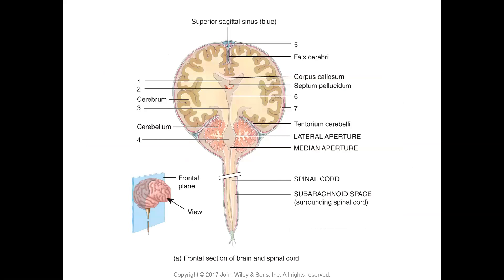The brain and spinal cord are constantly bathed in cerebrospinal fluid, which provides oxygen, nutrients, and other vital chemicals. The CSF is derived from the blood through little capillaries known as the choroid plexus. There is a very specific, controlled filtration and secretion process producing the CSF. Ependymal cells help secrete the CSF into the four brain cavities known as ventricles.